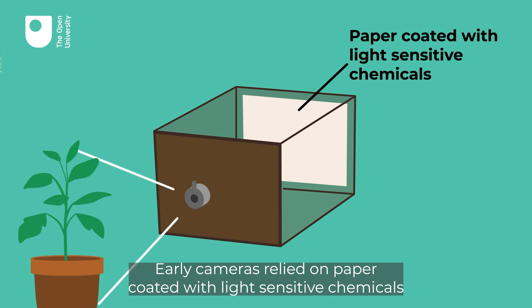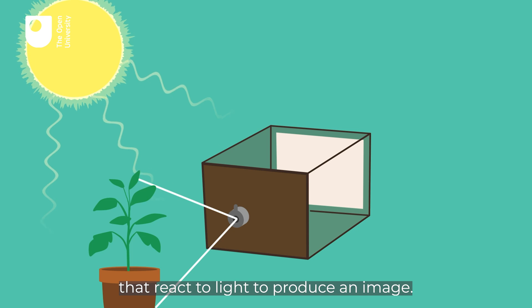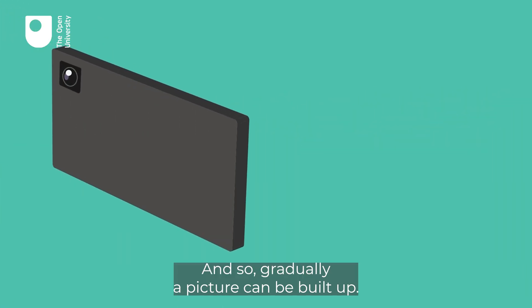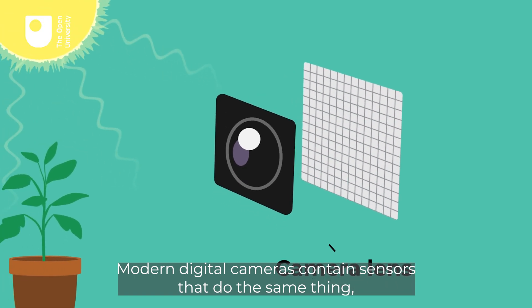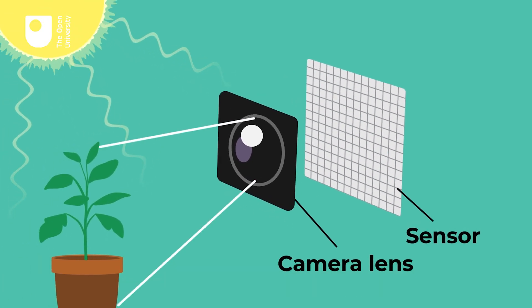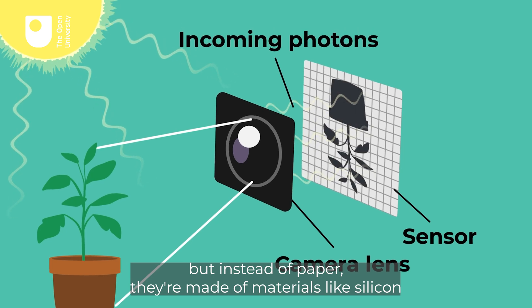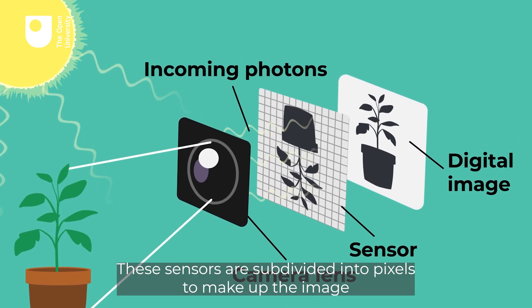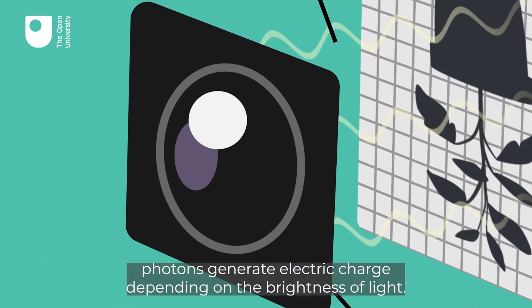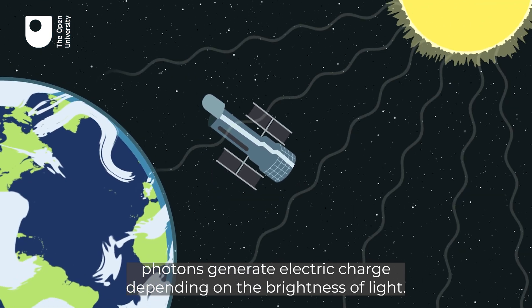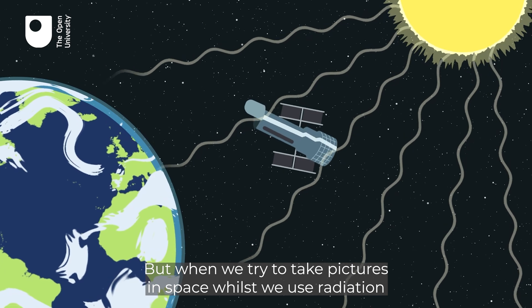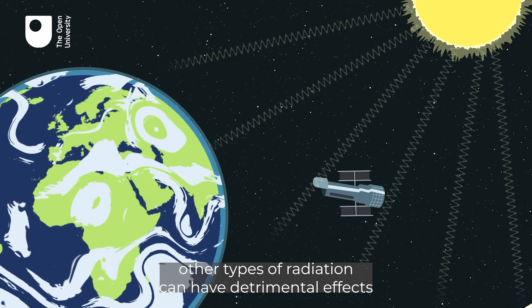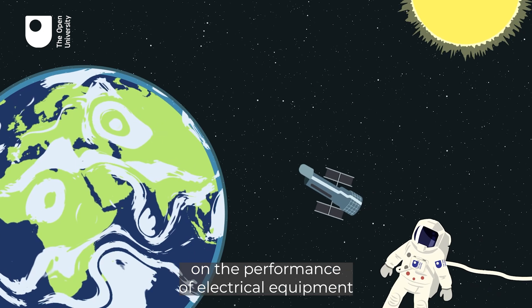Here on Earth we've learned to use visible light every time we take a picture. Early cameras relied on paper coated with light-sensitive chemicals that react to light to produce an image — the more light that falls in one region of the paper, the brighter that part of the image, and so gradually a picture can be built up. Modern digital cameras contain sensors that do the same thing, but instead of paper they're made of materials like silicon that are also sensitive to light, specifically photons. These sensors are subdivided into pixels to make up the image, and within each pixel photons generate electric charge depending on the brightness of light. But when we try to take pictures in space, other types of radiation can have detrimental effects on the performance of electrical equipment.